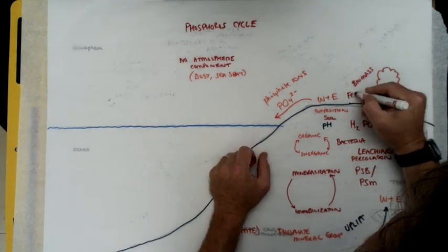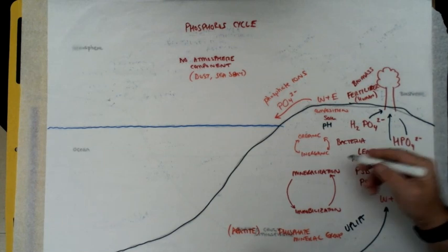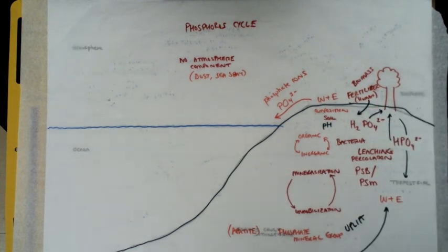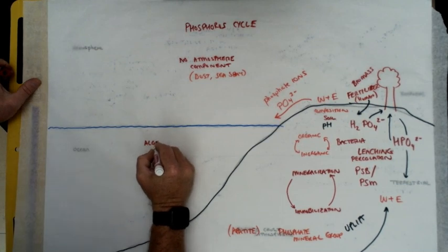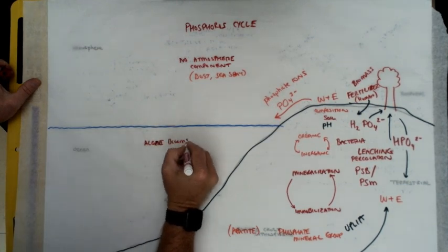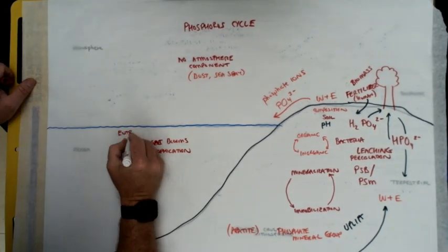Looking at the no or no atmospheric component being a part of this phosphorus cycle. Now there is a tiny little bit of dust and sea spray that gets into the atmosphere, but mostly it's the terrestrial components and sinks and the oceans.